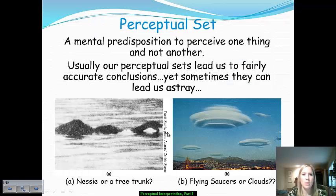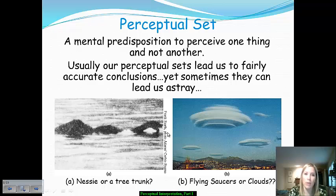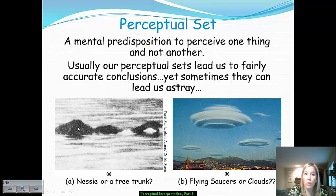Much of what we struggle with when adapting to our environment, based on perceptions we hold, is because of a perceptual set. This is a predisposition to perceive a certain thing — to look at something that could be A or B and perceive it only as black or white. Typically perceptual sets won't lead us astray; they can be fairly accurate. But every once in a while they can. This well-known image from Scotland is supposed to represent Nessie, the Loch Ness Monster — but many believe it's actually just a weird-looking tree branch floating in the water. Both are examples of perceptual set.